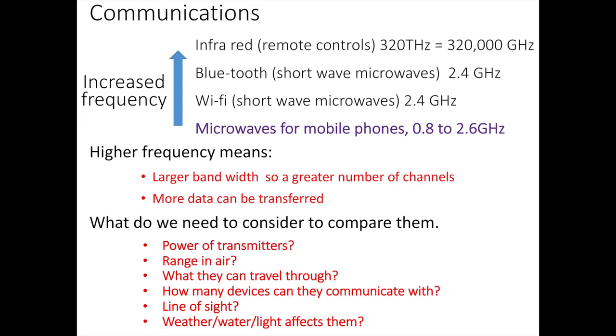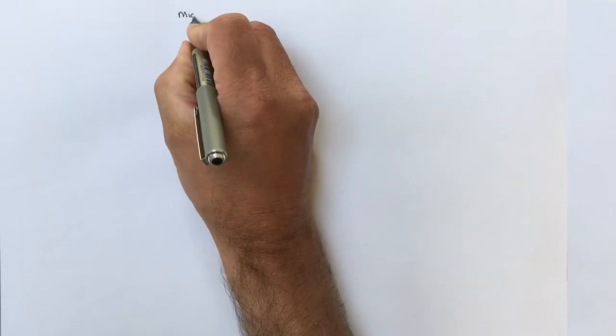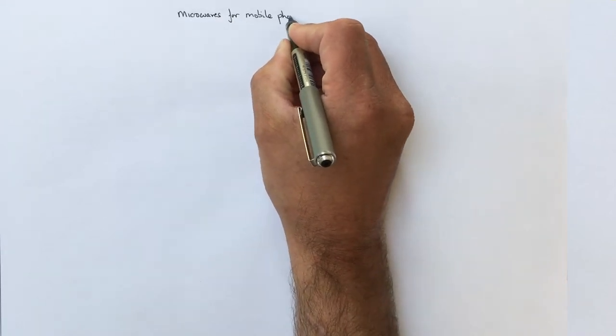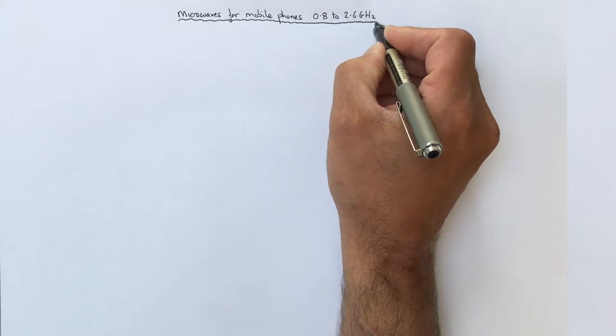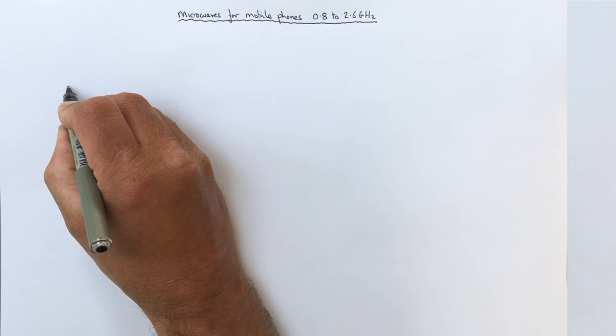So firstly let's look at microwaves for mobile phones. So microwaves are used for mobile phones and have a frequency range of about 0.8 to 2.6 GHz. So how do we communicate with mobile phones?